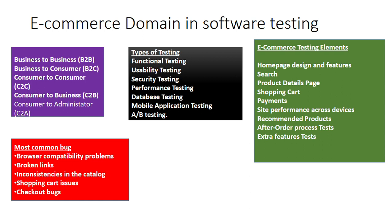For site performance, we check how the site performs across different devices — on a laptop versus a mobile phone. For recommended products, we check if selecting a product from a brand like Zara triggers relevant recommendations. We also check return support — if a product has been purchased and the customer wants to return it, how well the website handles that. Extra features like FAQs, login, and customer reviews are also checked.